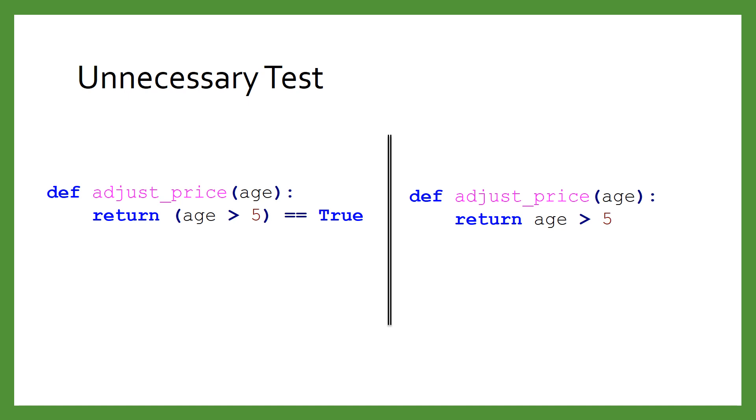'Age > 5' already evaluates to either true or false. If you compare a Boolean value to true, then the result is the same Boolean value. Nothing is accomplished. You have simply made your code more complex.